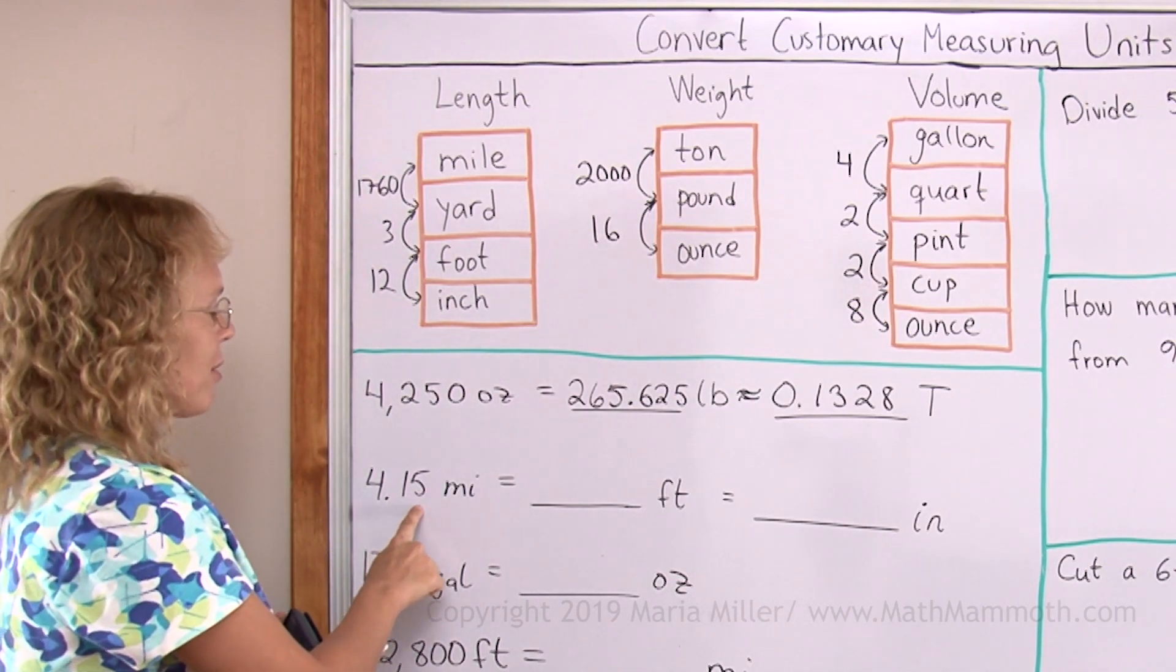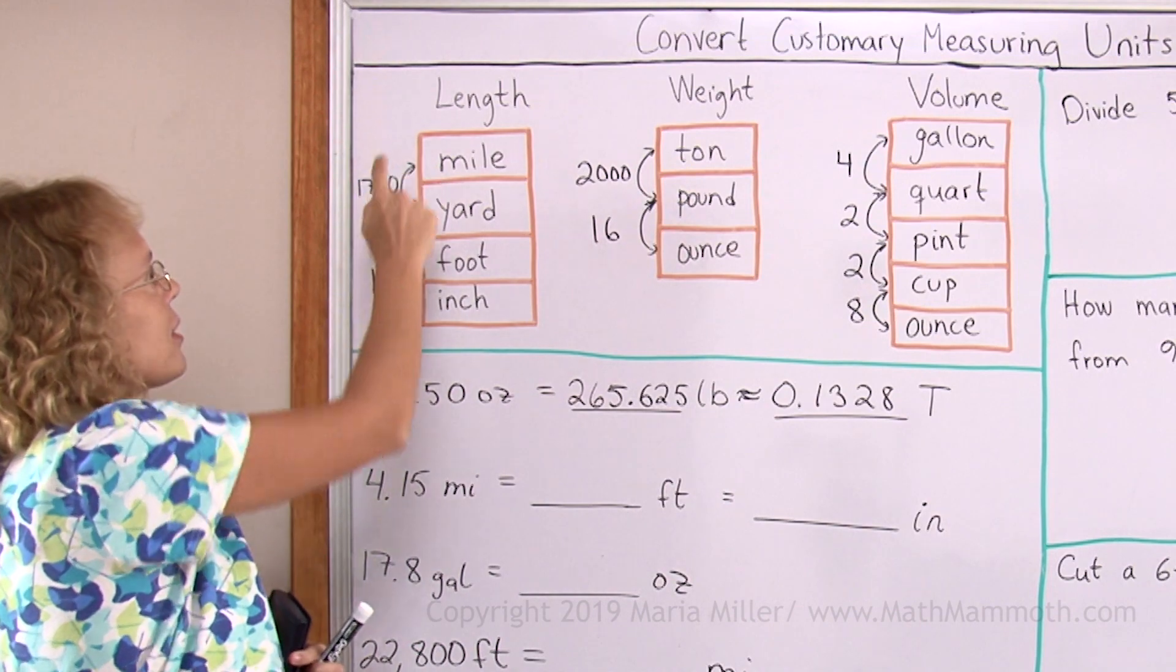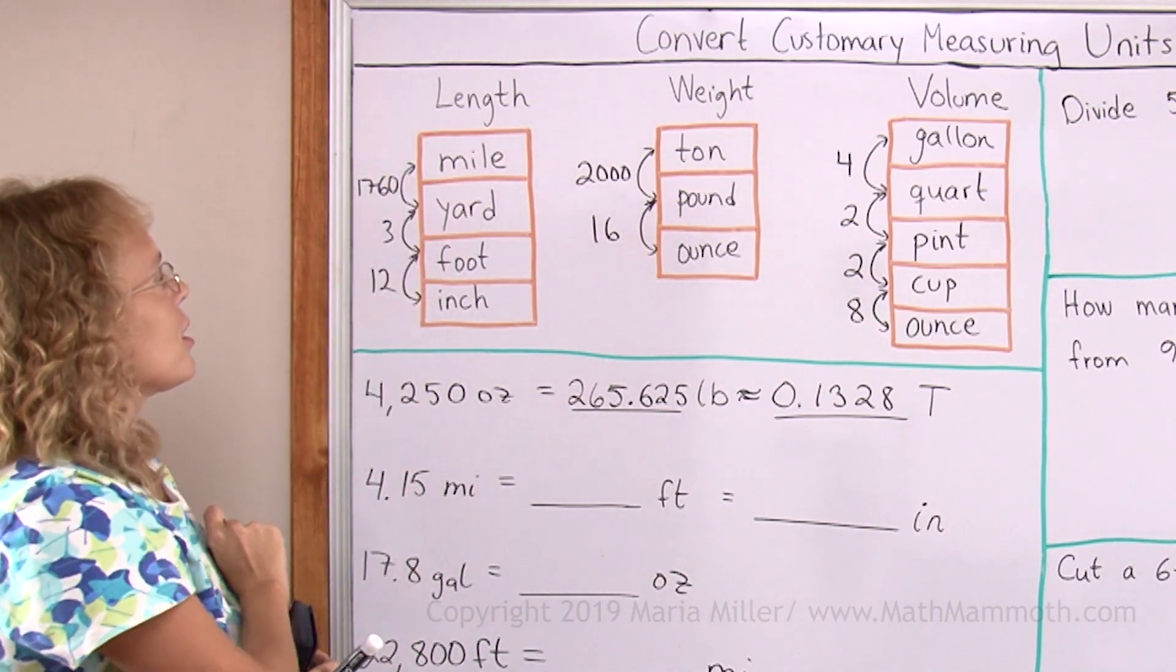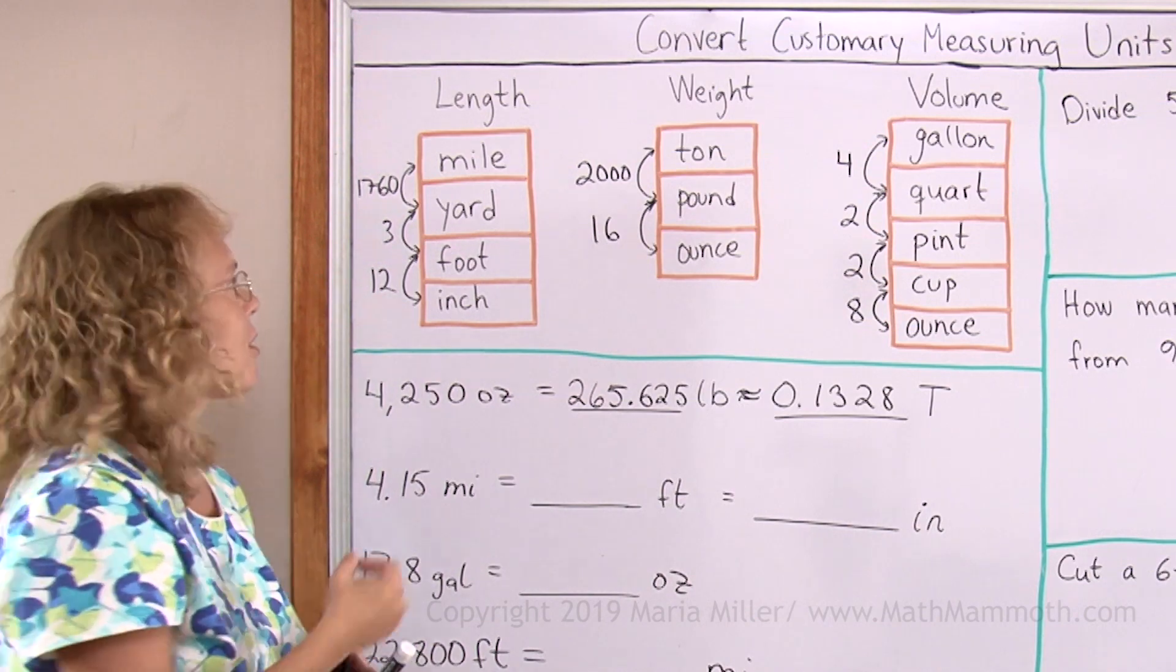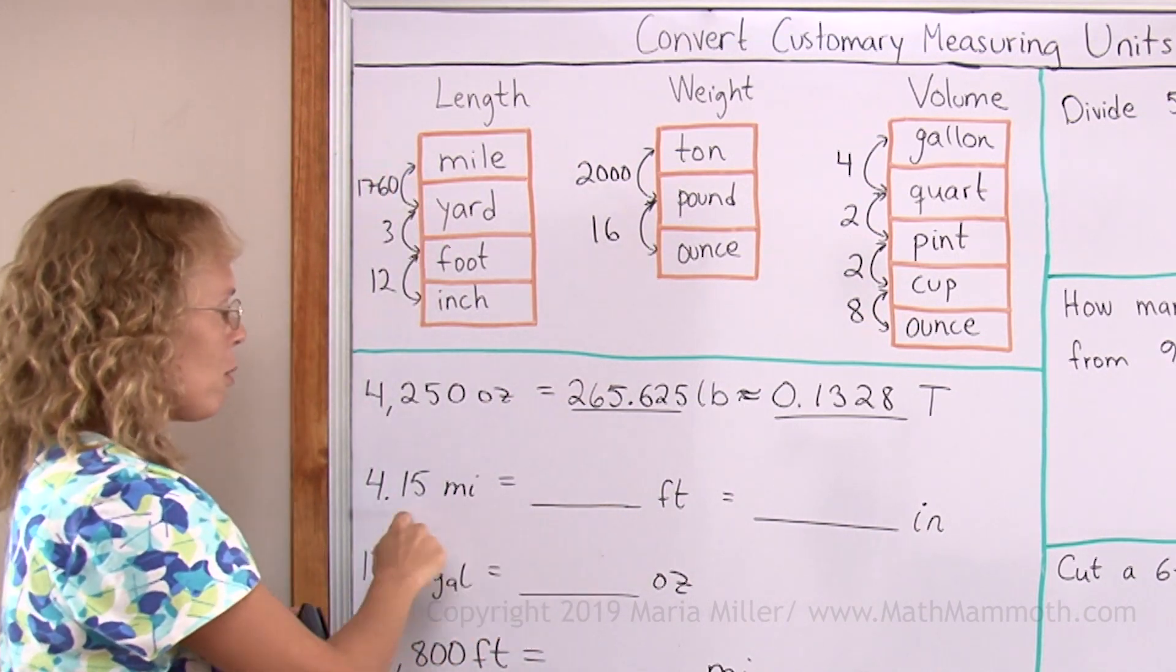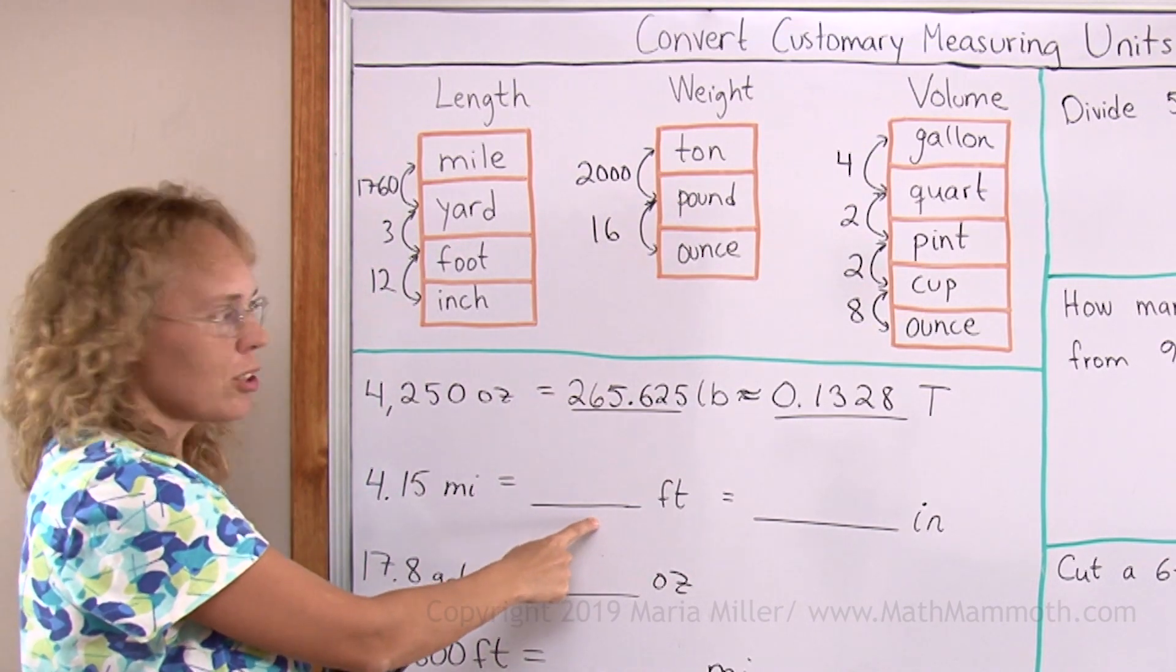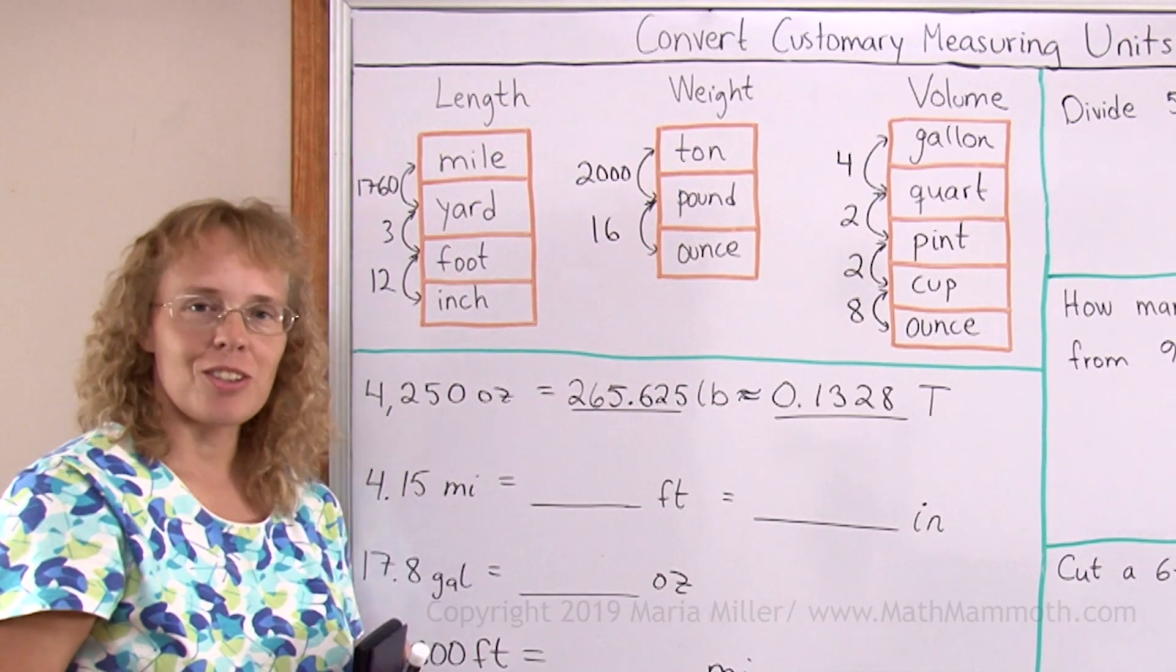4.15 miles into feet. Now miles and feet are here. So my conversion factor, you might even remember, it is 5280. And either multiply or divide by it. Do I want to have a bigger number here or smaller number? Smaller than four or bigger than four? I want to have a bigger number, you know, lots and lots of feet.